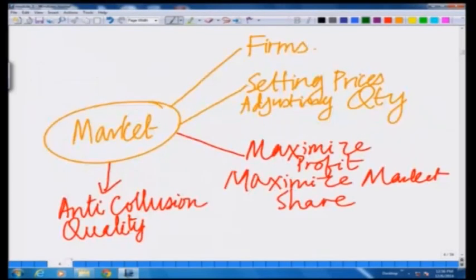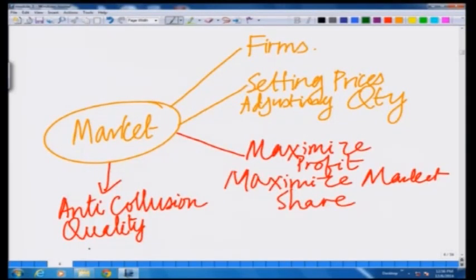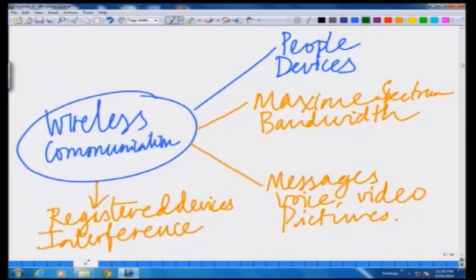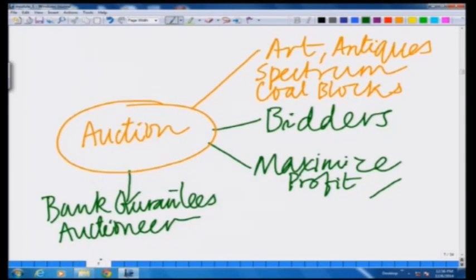We have looked at a couple of examples of games: markets, which is a game between different firms; politics, which is a game between different politicians or political parties; a wireless communication scenario, which can be modeled as a game between different mobile devices competing to transmit over the radio channel; and an auction scenario, which is a game between different bidders trying to win different objects such as art or antiques.